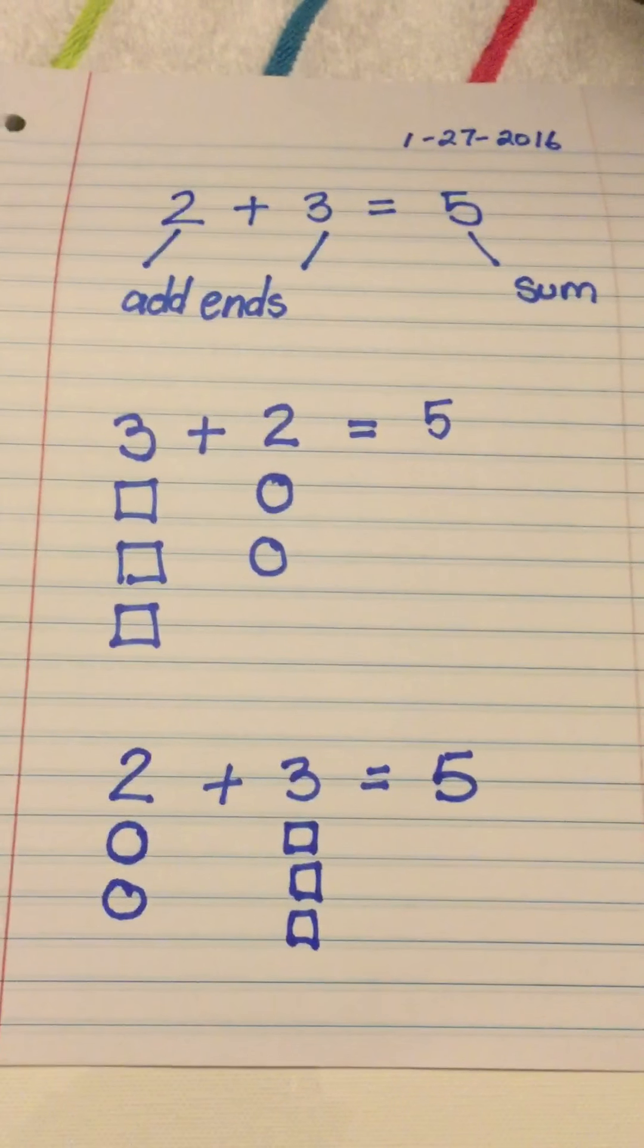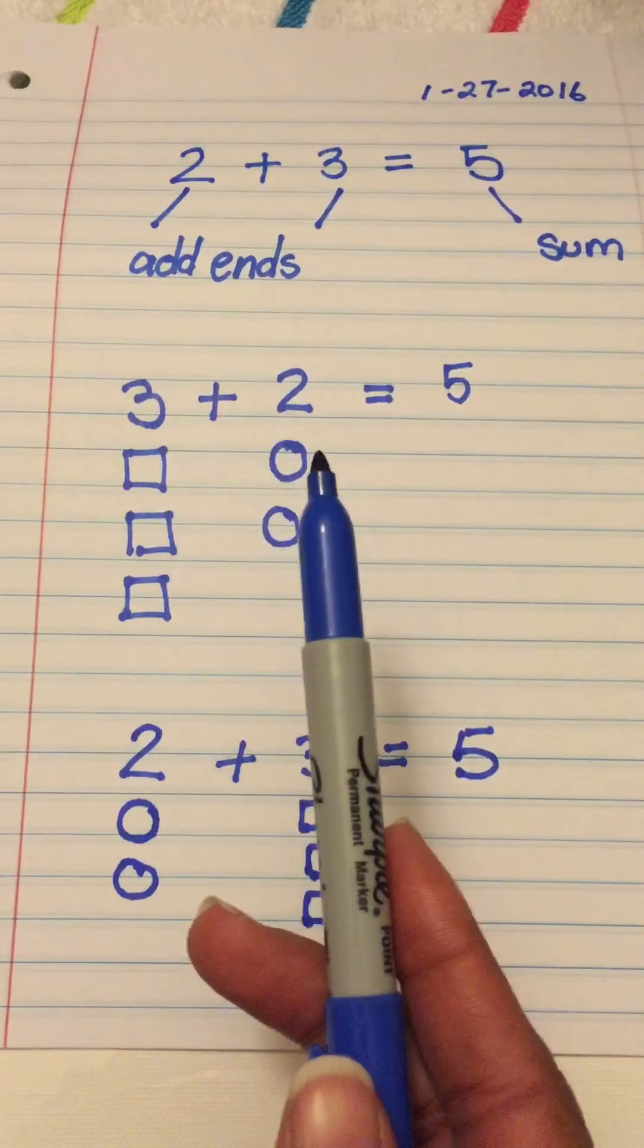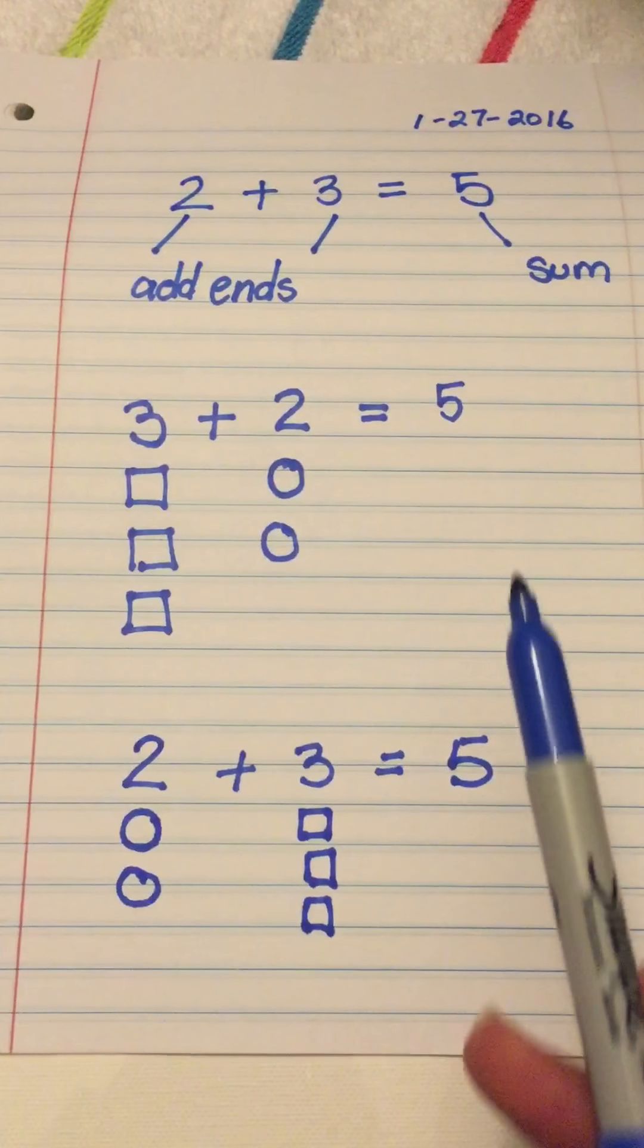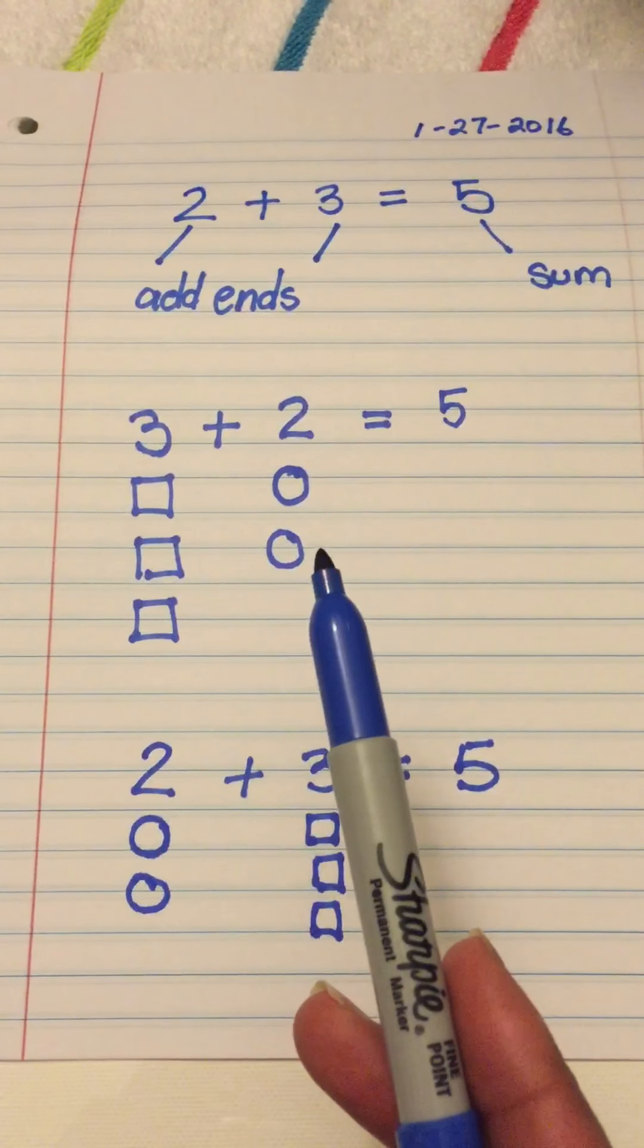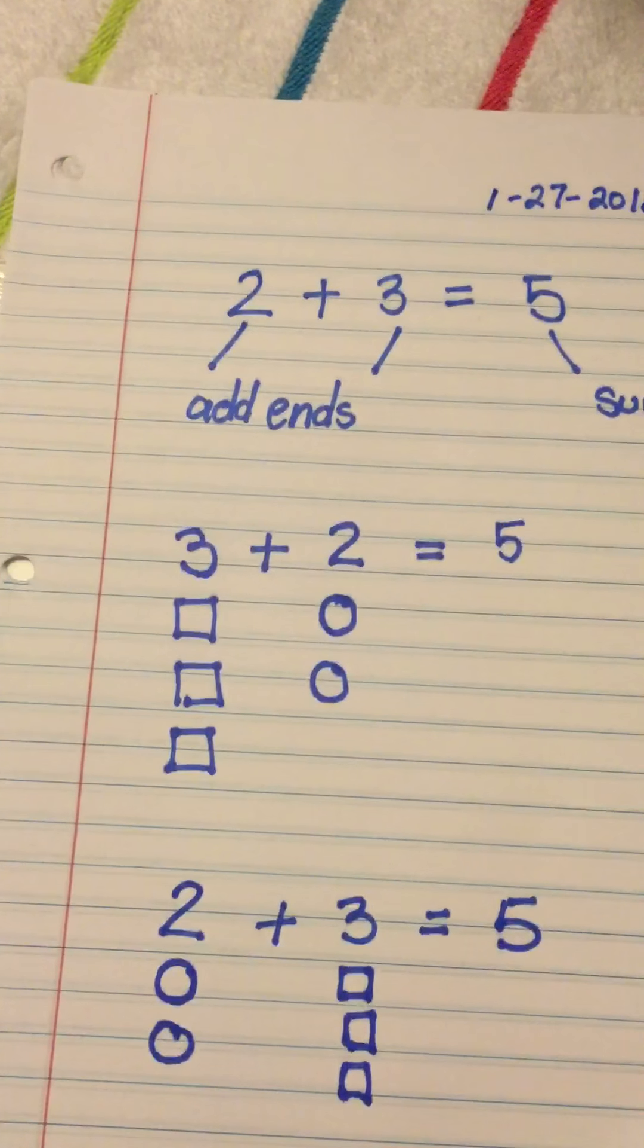So, friends, what I want us to remember from today's lesson is it doesn't matter which order we have our addends, our sum will always be the same. So, three plus two is the same as two plus three. Another way that we can write this down to help us remember is like this.